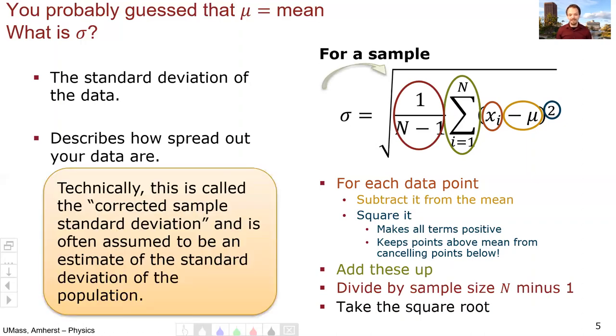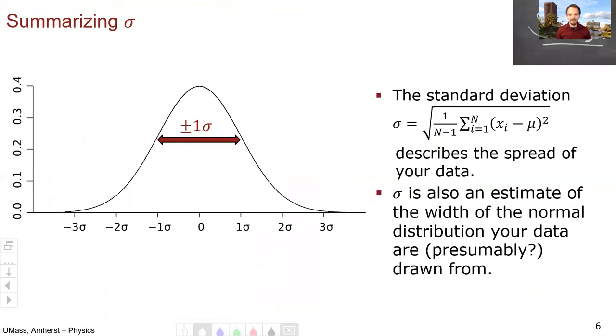Technically, this is called the corrected sample standard deviation, although you don't need to know that term, but you might have seen it in a statistics course, and it's often assumed to be a good estimate of the standard deviation of the population, although there are specific conditions that must be met for that assumption to be true. So in summary, sigma is the standard deviation describing the spread of your data, which means it's also describing the width of the normal distribution that your data are presumably being drawn from.